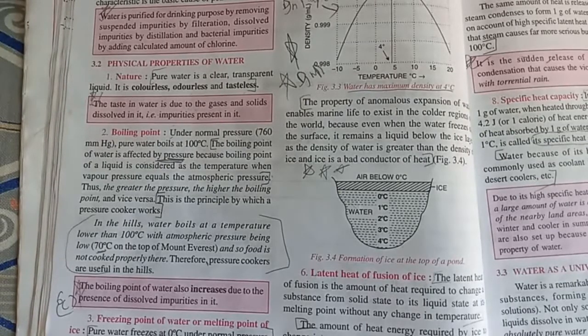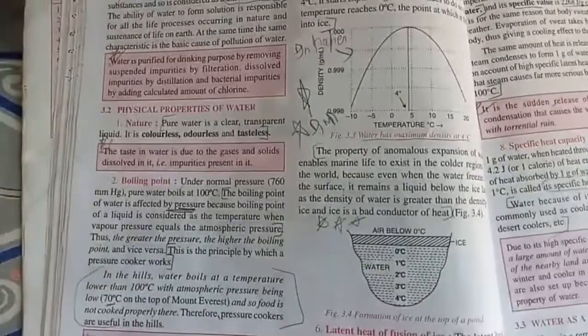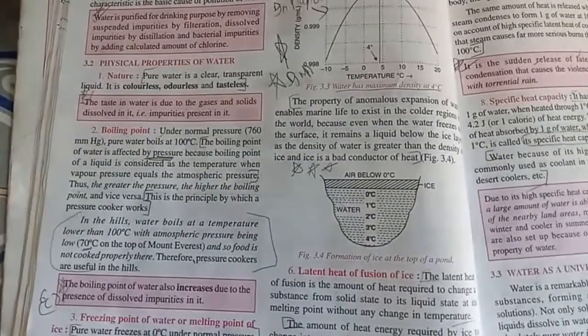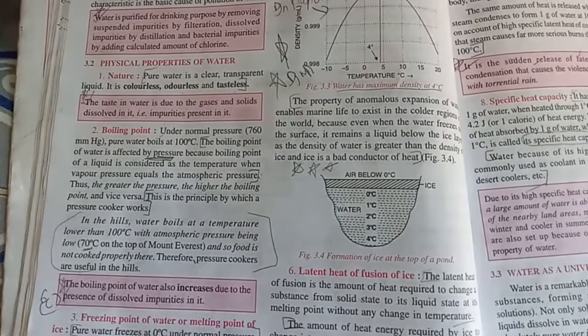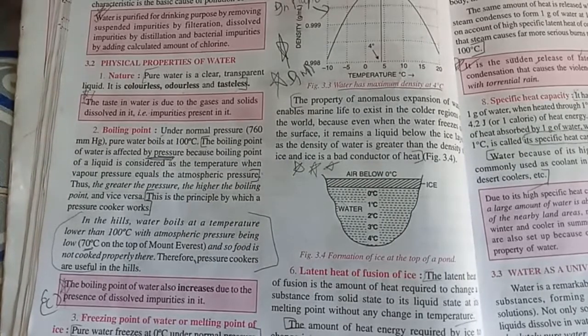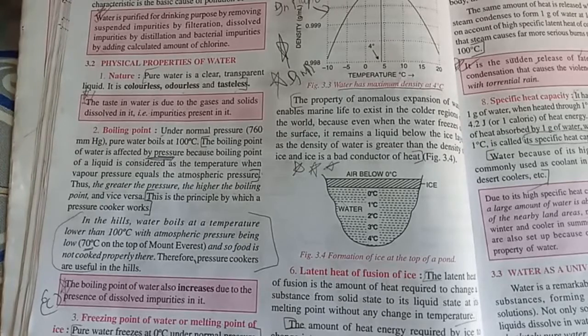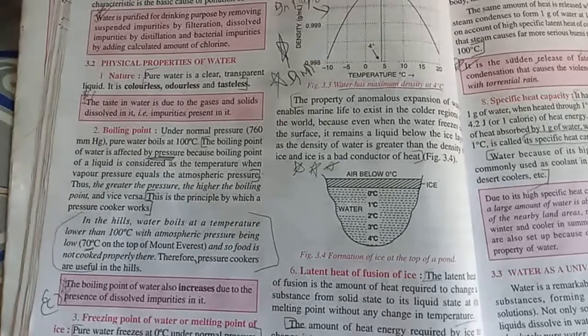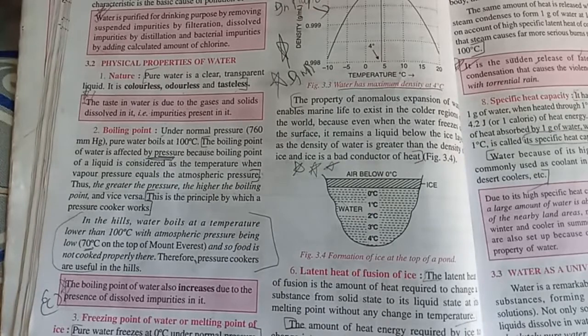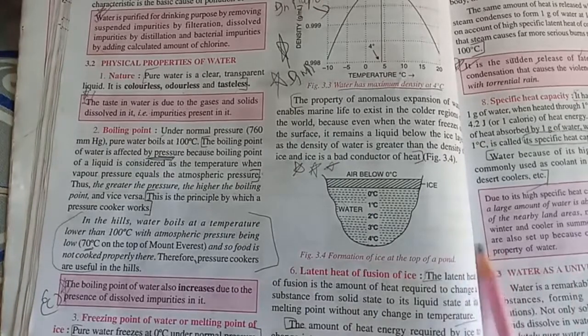The freezing point of water, or melting point of ice, is the same: zero degrees Celsius under normal pressure. Freezing point of water decreases with increase in pressure.